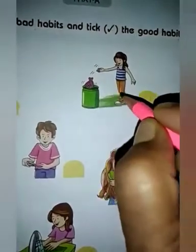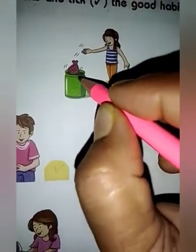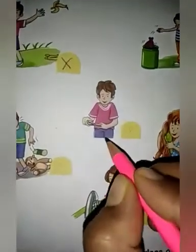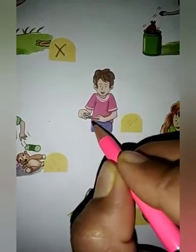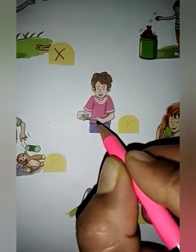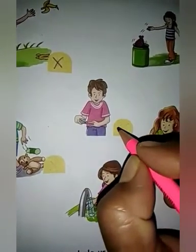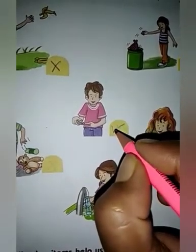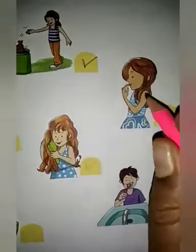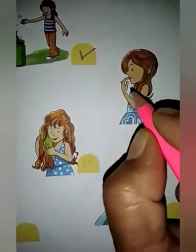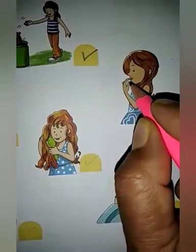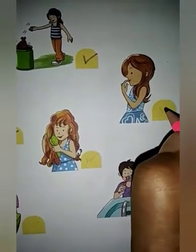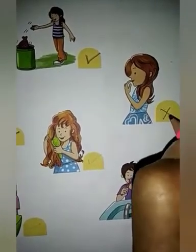In this picture you can see this girl is throwing the garbage in the dustbin, so this is a good habit — put a tick mark. Next, this boy is cutting or trimming his nails. You should always trim your nails regularly, once or twice a week. Next, this girl is biting her nails with her teeth. Is it a good habit? No, so put a cross mark.